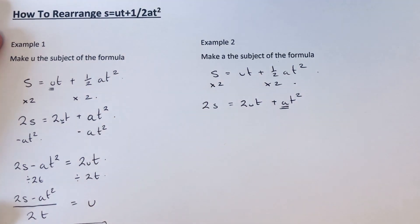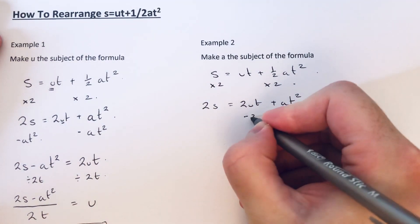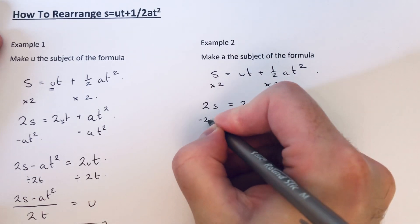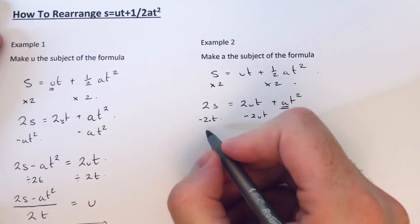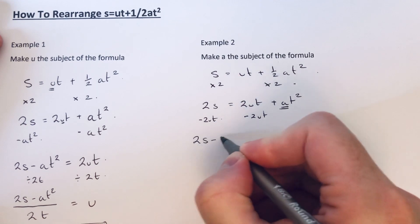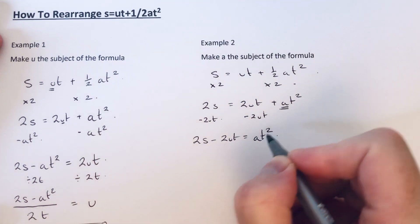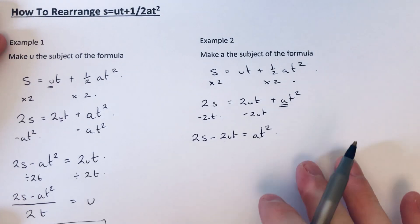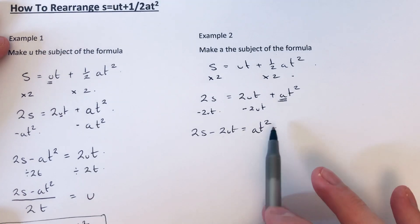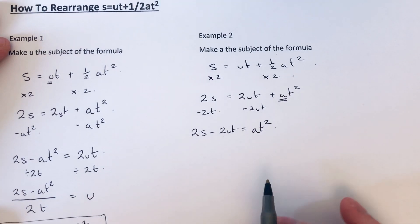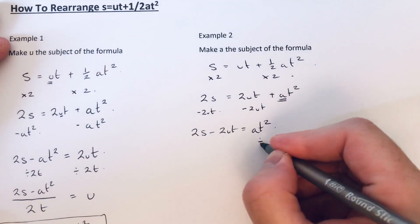So if we do the opposites in reverse, let's get rid of the 2ut first. Let's subtract 2ut from both sides. So that will give me 2s minus 2ut equals at squared.